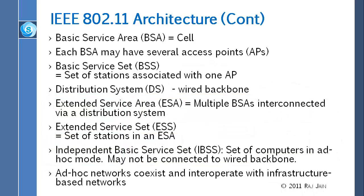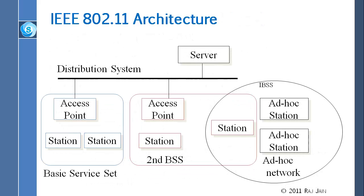So these are the terms we use. There is a BSS and a basic service area. BSS relates to the access point, where in the same area there might be more than one access point — they are all part of that same area with the same SSIDs. The distributed set connects them, and the extended service area is the BSS connected by the distribution system. The extended service set is the set of stations. IBSS is the ad hoc stations. These networks can coexist and interoperate with infrastructure-based networks. When you have an access point, that is called an infrastructure-based network.